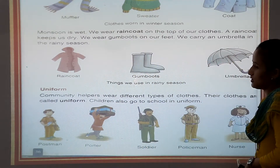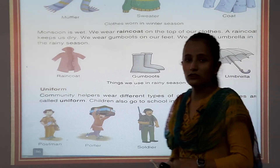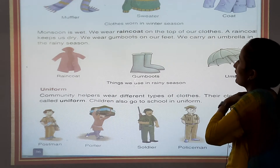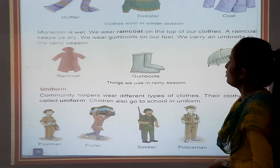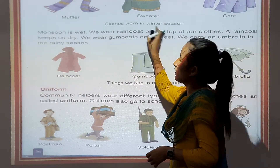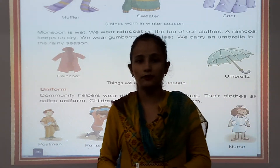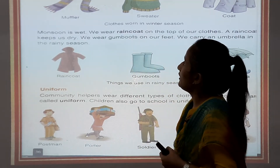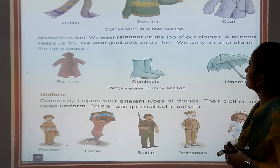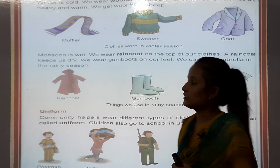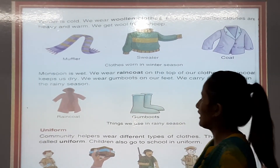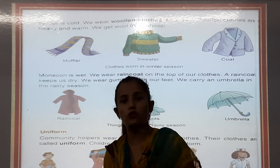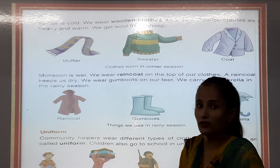We get wool from sheep. Where do we get wool? Wool from sheep — हम लोग को ऊन भेड़ से मिलता है। Muffler, sweater, coat are woolen clothes, worn in winter season. Woolen clothes keep our body warm and hot. Because in winter season it is very cold, woolen clothes keep our body warm.